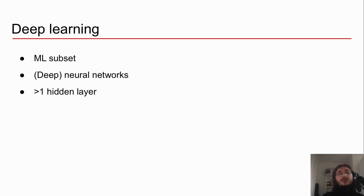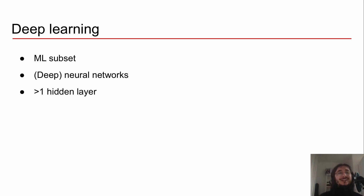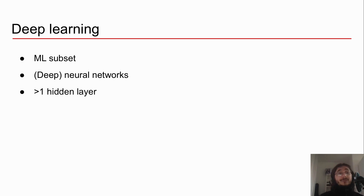Deep learning itself is a subset of machine learning, and it uses deep neural networks. A deep neural network is simply a neural network that has more than one hidden layer — that's it. So deep learning means using deep neural nets for solving all sorts of very complicated problems. Throughout this series of videos, we're going to be coding deep neural nets and seeing different flavors of neural nets.